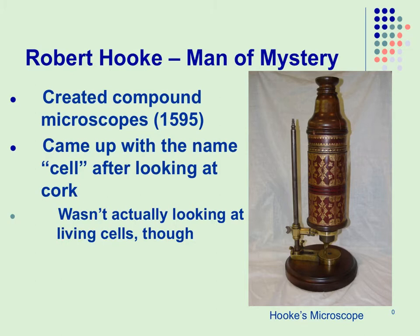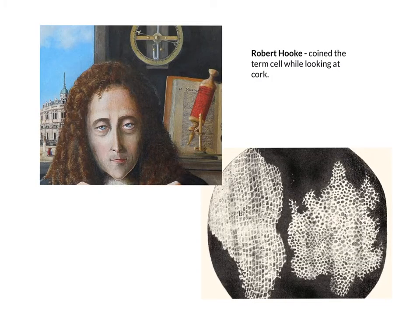Robert Hooke is by some credited with the invention of the compound microscope, but he did not invent it. He basically improved upon it, and what you see on the screen is a picture of his microscope that he created. He is also credited with coining the term 'cells.' As you can see in the picture, this is a drawing he did when he looked at cork underneath his microscope, and he called it cells because it looks like rooms with hallways — to him it looked like the rooms you would see in a monastery.